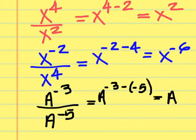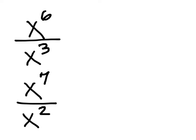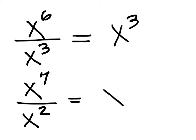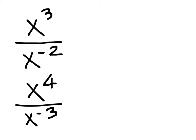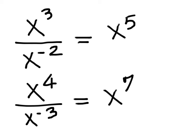That last example works out to x squared. Student answers: the first problem gives x to the third, the second gives x to the fifth. Subtracting the exponents: the first answer is x to the fifth, and the second is x to the seventh.